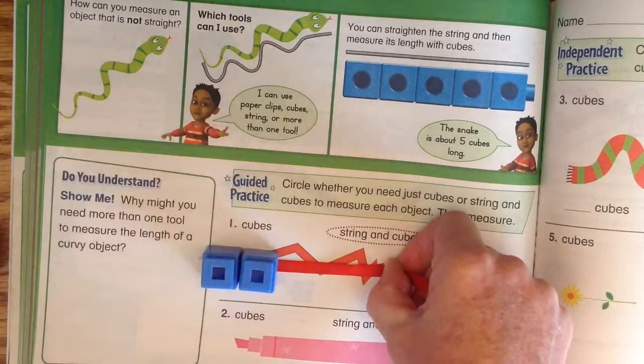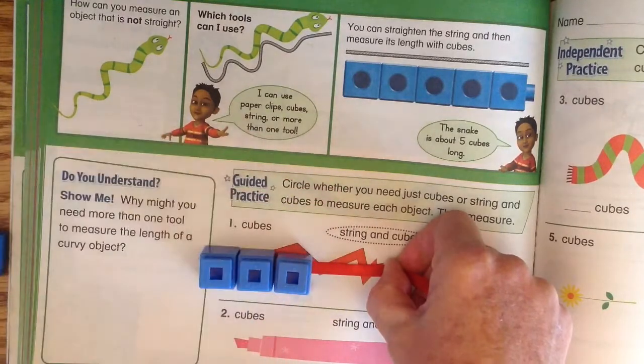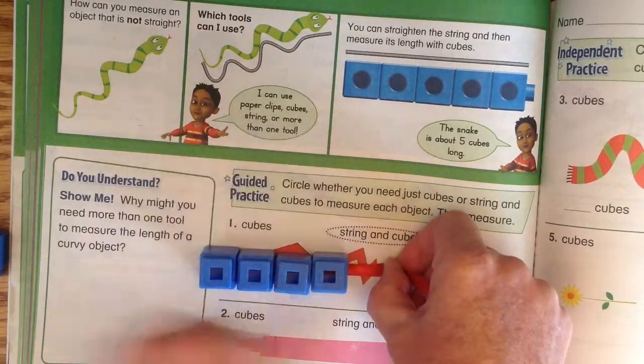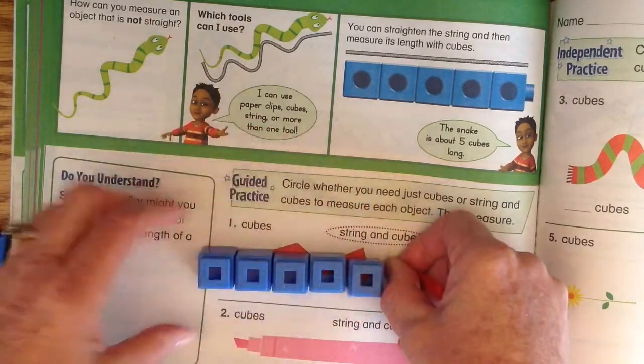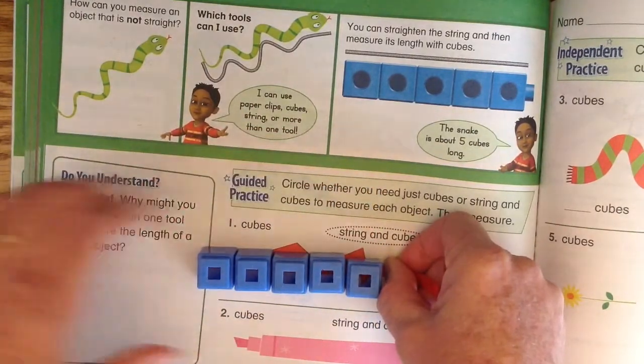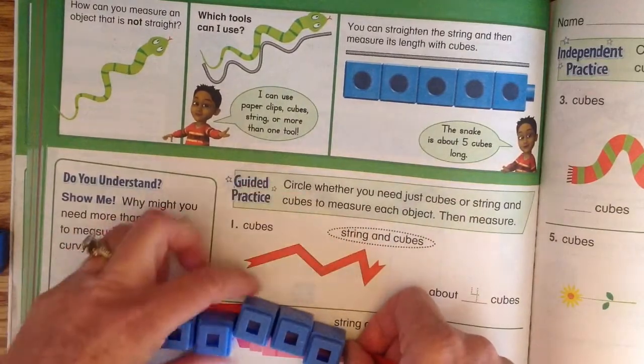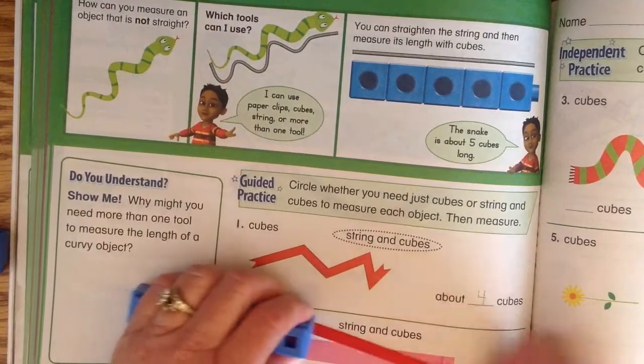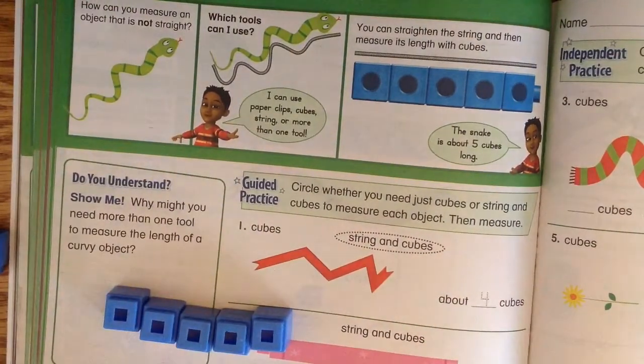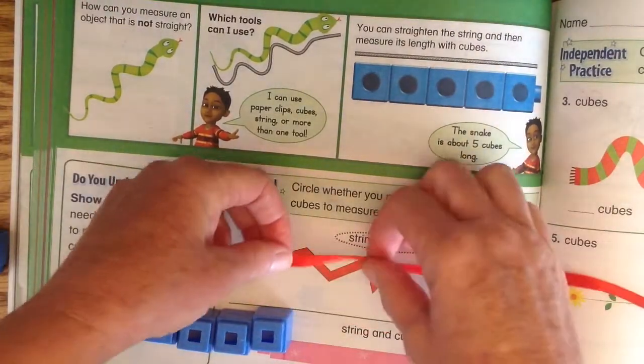One, two, three, four, and my thumbs are in the way but five cubes. So this red squiggly line is about, well for mine it was about five cubes long. The book says four cubes so I must have made mine a little too big there.